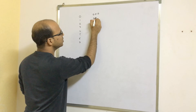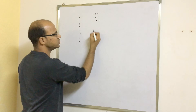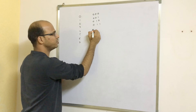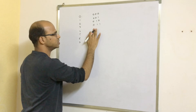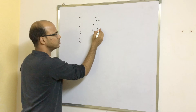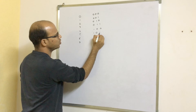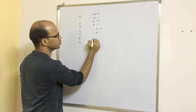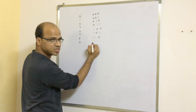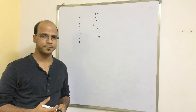So we have: 0 → 000, 1 → 001, 2 → 010, 3 → 011, 4 → 100, 5 → 101, 6 → 110, and for 7 we have 111. That's your binary format.